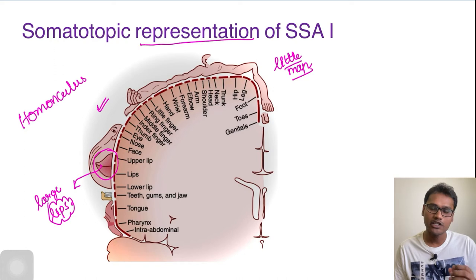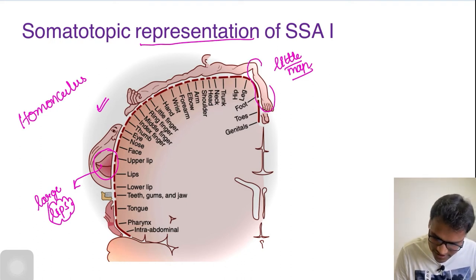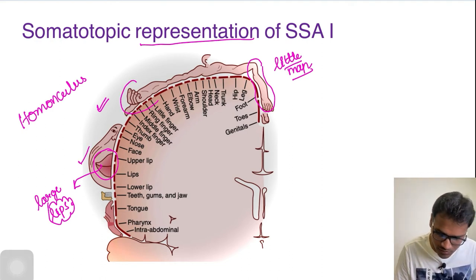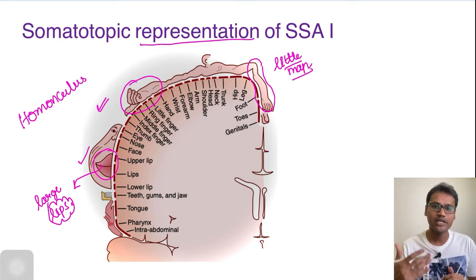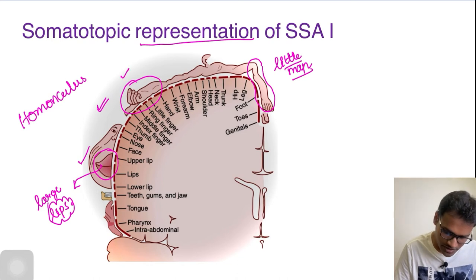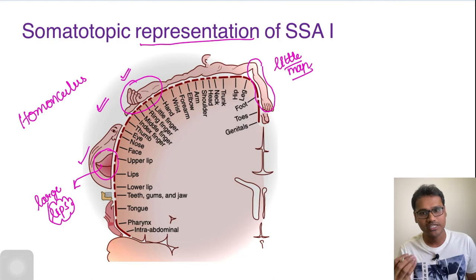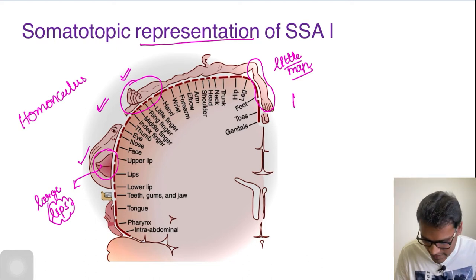If a particular part has very little number of receptors and not many fine sensations go from it, it will have very less representation — as you can see, the limbs are less. The facial regions and lips have the maximum representation, followed by fine movements. Most of our fine movements are done with our hands and fingers, that's why they have a good amount of representation. As functionality or precision comes down, the representation also decreases.